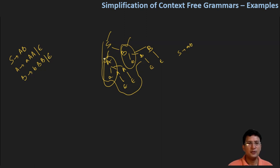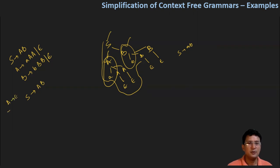The only thing is that we will have to remove the epsilon productions. So to remove the epsilon productions, S produces A, B as such. So we have S produces A, B, and S produces B.